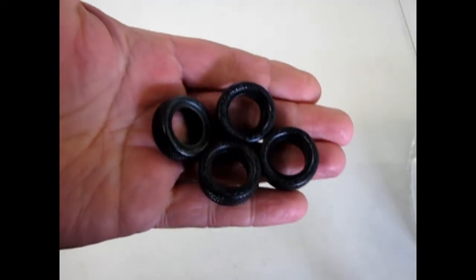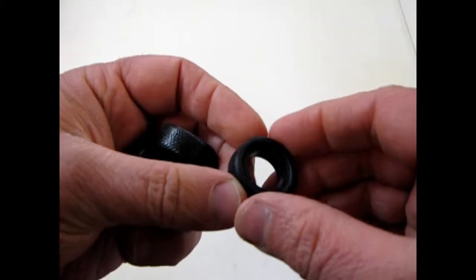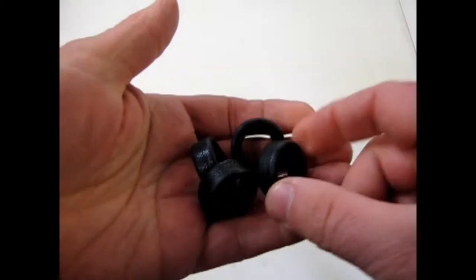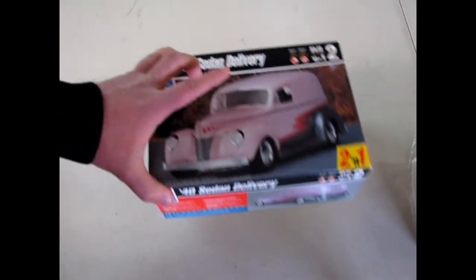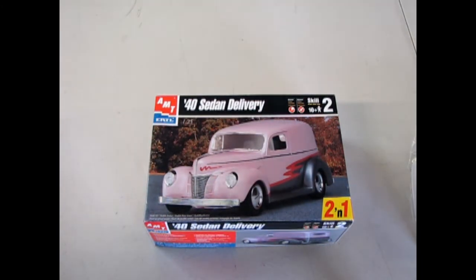Now in this kit I am missing the stock tires. But you can see those in other videos. And here we have our custom tires. Which are very 1990s and very modern. And that concludes our look at the AMT 40 Ford sedan delivery. The 1998 edition from RC2.